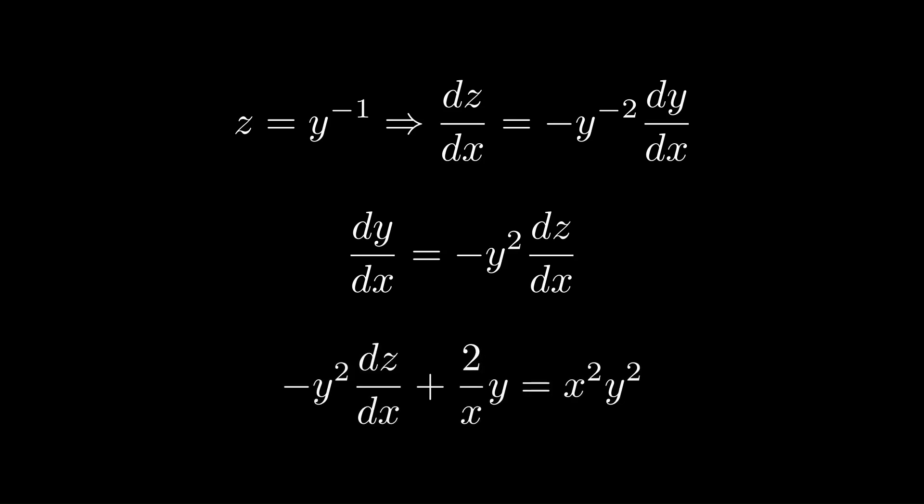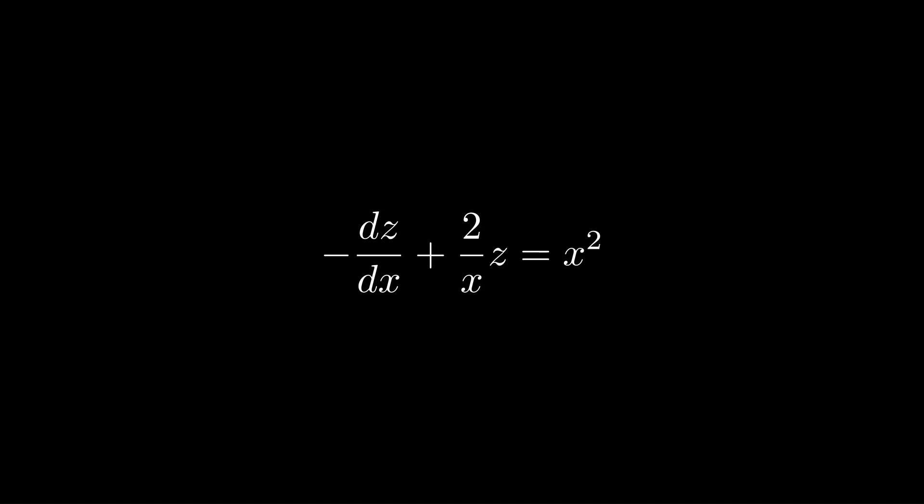Differentiating both sides of the substitution gives dy/dx = −y² · dz/dx. We replace everything with z and get a differential equation in x and z. Multiplying through by negative one restores the familiar linear form with p(x) and q(x).